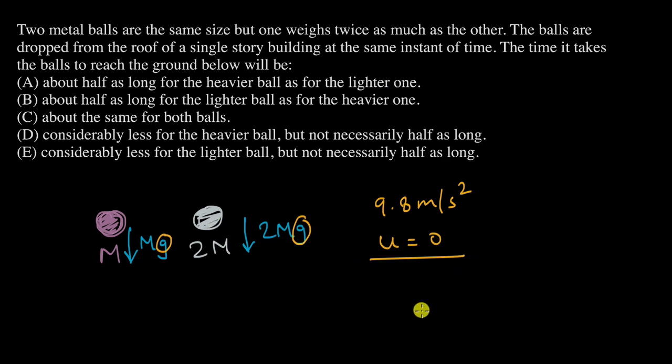If we try to figure out the time taken by both of these balls, we can use an equation of motion. We need to figure out time, which we do not know. We know the initial velocity is zero and we know acceleration which is minus 9.8 meters per second squared. We can use the equation s = ut + ½at². The distance covered by both of these balls is really the same because they are being dropped from the same height, so s₁ equals s₂.